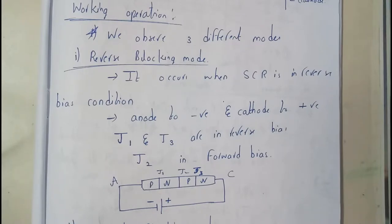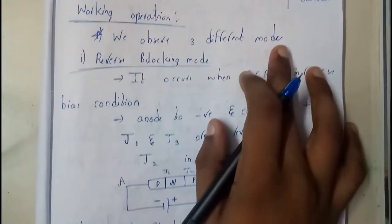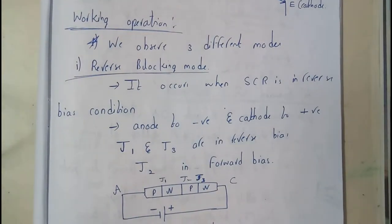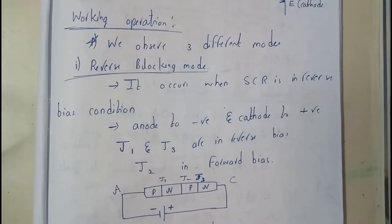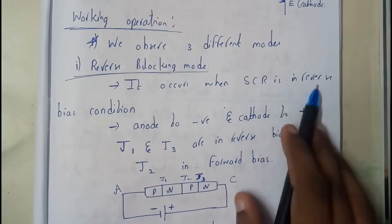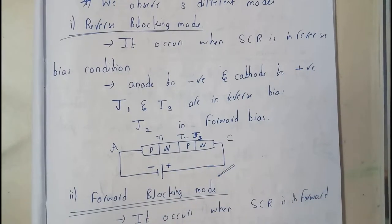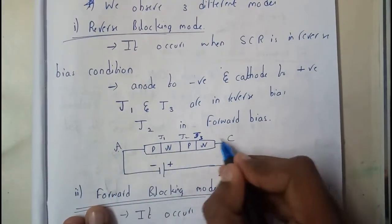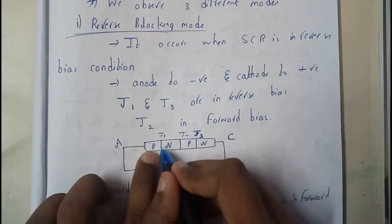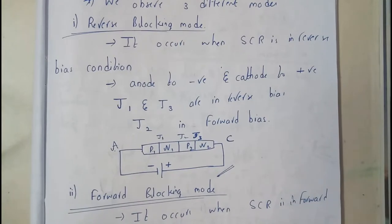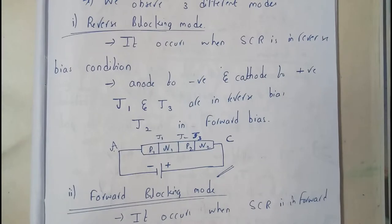Now let's go through the working of SCR. We observe three different modes. The first is Reverse Blocking Mode — it occurs when SCR is in reverse bias condition. In the reverse bias diagram, the four layers are P1-N1-P2-N2, giving us Junction J1 between P1 and N1, Junction J2 between N1 and P2, and Junction J3 between P2 and N2.